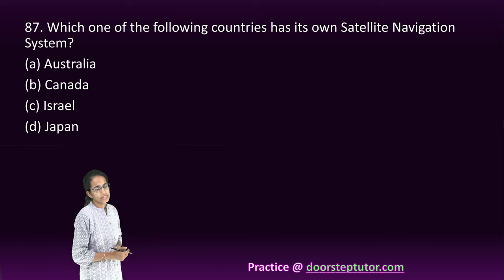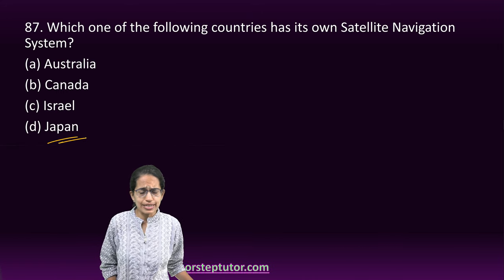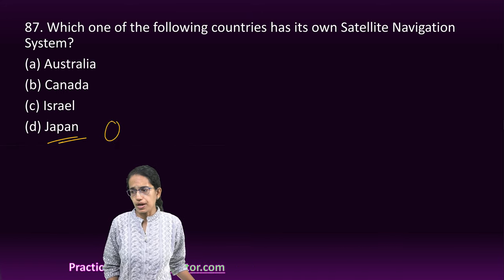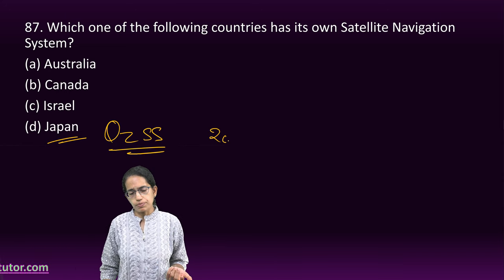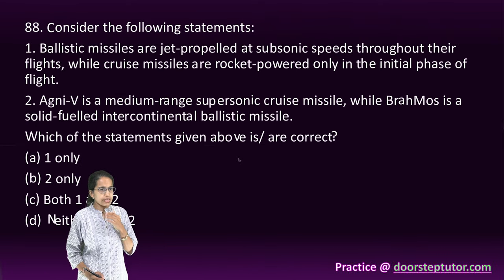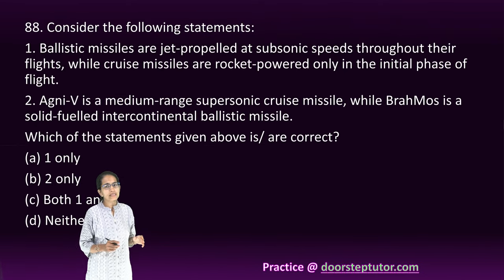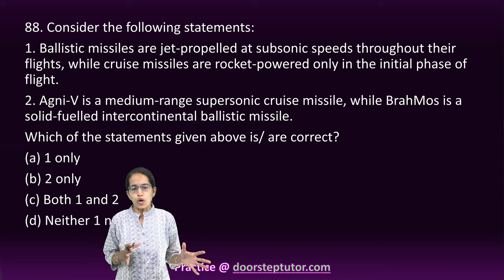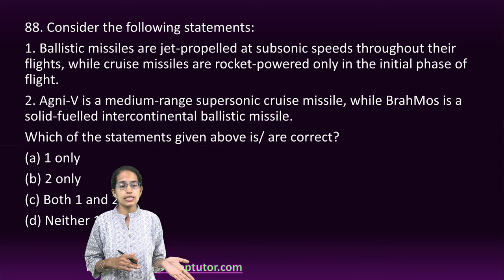The next question asks which countries have their own navigation system. The correct answer is Japan — QZSS is under development and will be fully operational by end of 2023. The next question addresses ballistic missiles, which are rocket-powered, while cruise missiles are jet-propelled — but in the question the explanations are interchanged.